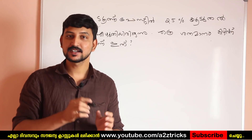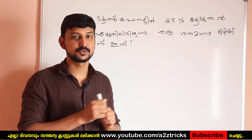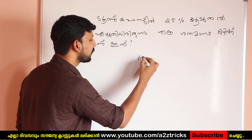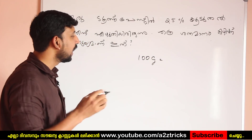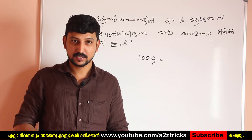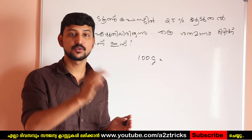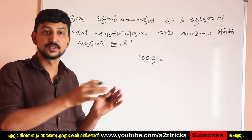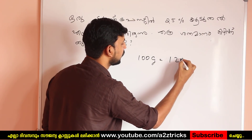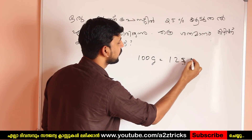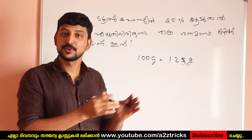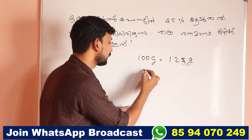Let's assume that 100 grams of toothpaste — we can add 100 grams of toothpaste. In this case of 100 grams, we can add 125 grams of toothpaste. A paste is made; it is 100 grams of rice.